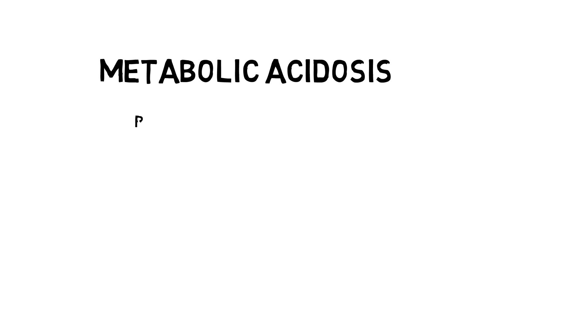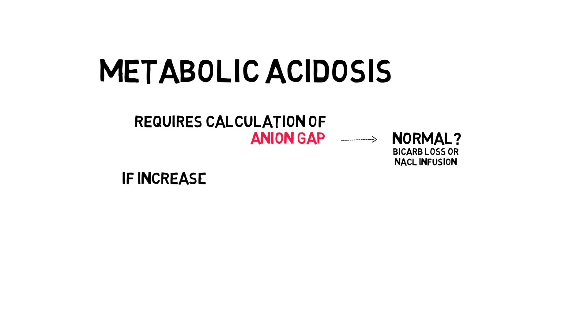So to sum this up, every metabolic acidosis requires the calculation of the anion gap. A normal anion gap suggests bicarb loss with a corresponding increase in chloride, or excessive normal saline infusion. An increased anion gap suggests an increase in unmeasured anions, which is usually caused by an increase in metabolic acids. Learn a mnemonic by heart, such as kilogram, mud piles, or gold mark, to make sure you don't forget the workup. And lastly, if the anion gap is increased, calculate the osmolar gap, as an increase suggests the ingestion of toxic alcohols.